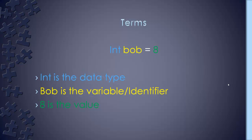When we do variables, there's always a type — integer, boolean, double, something like that — followed by the identifier or the variable name, and then you also have to give it a value. So when you see an expression like 'integer bob equals 8', we know that the type is integer, bob is the identifier, and 8 is the value.